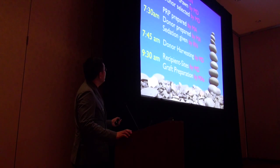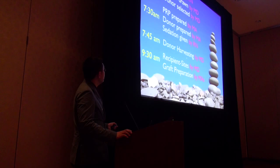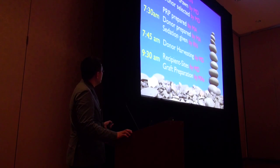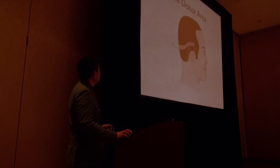I do the hairline, then the donor is selected. The PRP is prepared by the MA. The donor is prepared by the MA in terms of shaving, getting it prepped and taped. Sedation is set by the RN. I start doing the donor harvesting around 7:45. I'm done with the donor closure and the strip is ready in the hands of my techs, and I start making sites around 9:30.